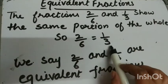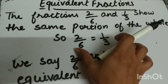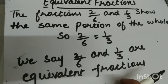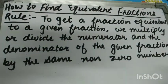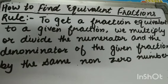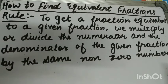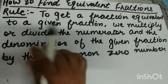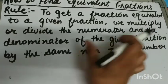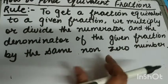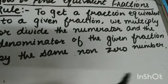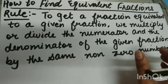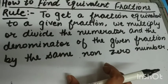Two by six and one by three — both are equivalent. We say that two by six and one by three are equivalent fractions. Next is how to find equivalent fractions. To get a fraction equivalent to a given fraction, we multiply or divide the numerator and the denominator of the given fraction by the same non-zero number.